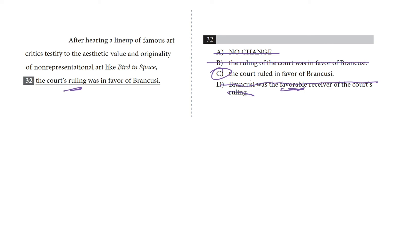Lots of students find that with practice they start recognizing specific common errors and question types, and this can save you a lot of time on test day. Instead of testing every choice and guessing, you can start hunting for the one choice that fixes the error. Once we realized we had to have the court be the noun that the modifying phrase described, we were able to eliminate every choice except C. Good luck out there — you've got this!